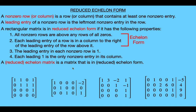Since it satisfies the first two properties it's at least in echelon form. We check the last two properties to see if it's in reduced echelon form. It satisfies the third property because all leading entries are ones. But it doesn't satisfy the fourth property — one of the leading ones has another non-zero entry in its column, and the leading one in the third row also has non-zero entries in its column. So this matrix is only in echelon form.